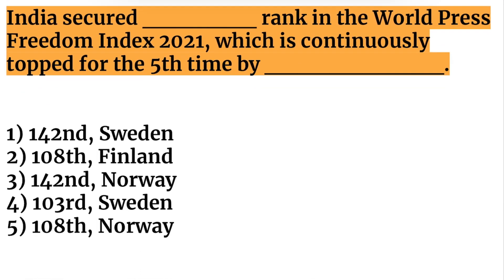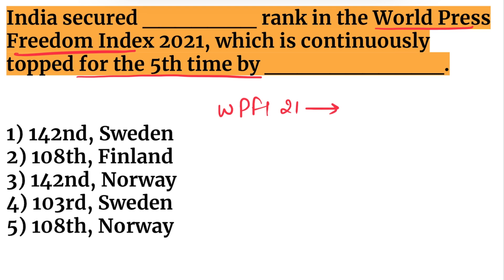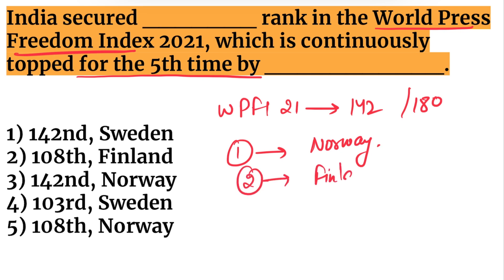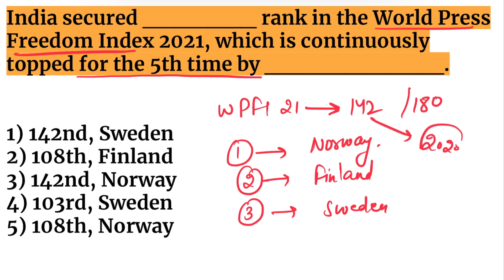India secured what rank in the World Press Freedom Index 2021, which was continuously topped for the fifth time by which country? India's rank is 142 out of 180 countries — the same as in 2020. Norway topped the index for the fifth consecutive time, followed by Finland in second and Sweden in third position.